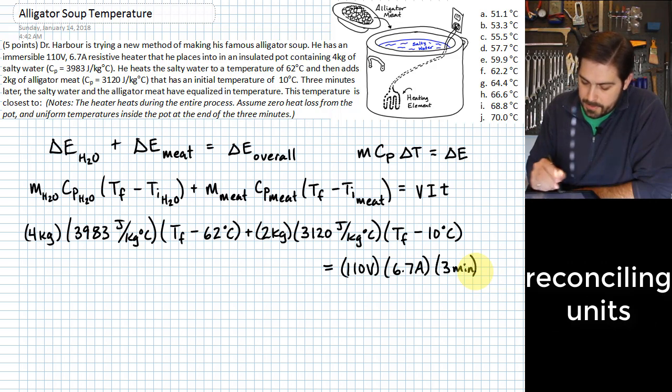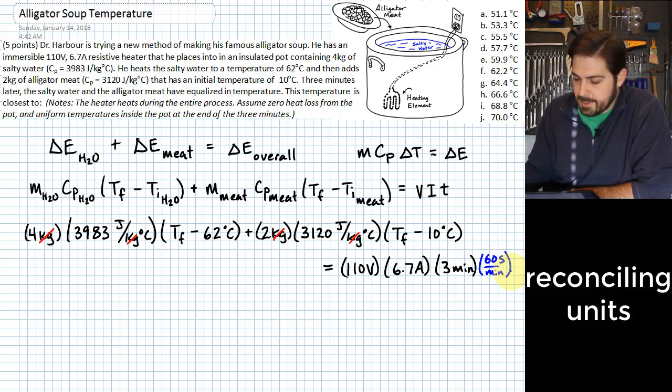It's probably worthwhile at this point to look at our different units. What we have here is that our kilograms cancel kilograms, we have degrees C that are canceled here versus the degrees C that's in the denominator of the dimensionality of the specific heat, and so we basically wind up with joules. If we have volts times amps, that gives us watts. Watts is joules per second. Here we have minutes, and so to make this all consistent, we probably should put in a 60 seconds per minute. The seconds would cancel out with the watts that are implied by the volts and the amps.